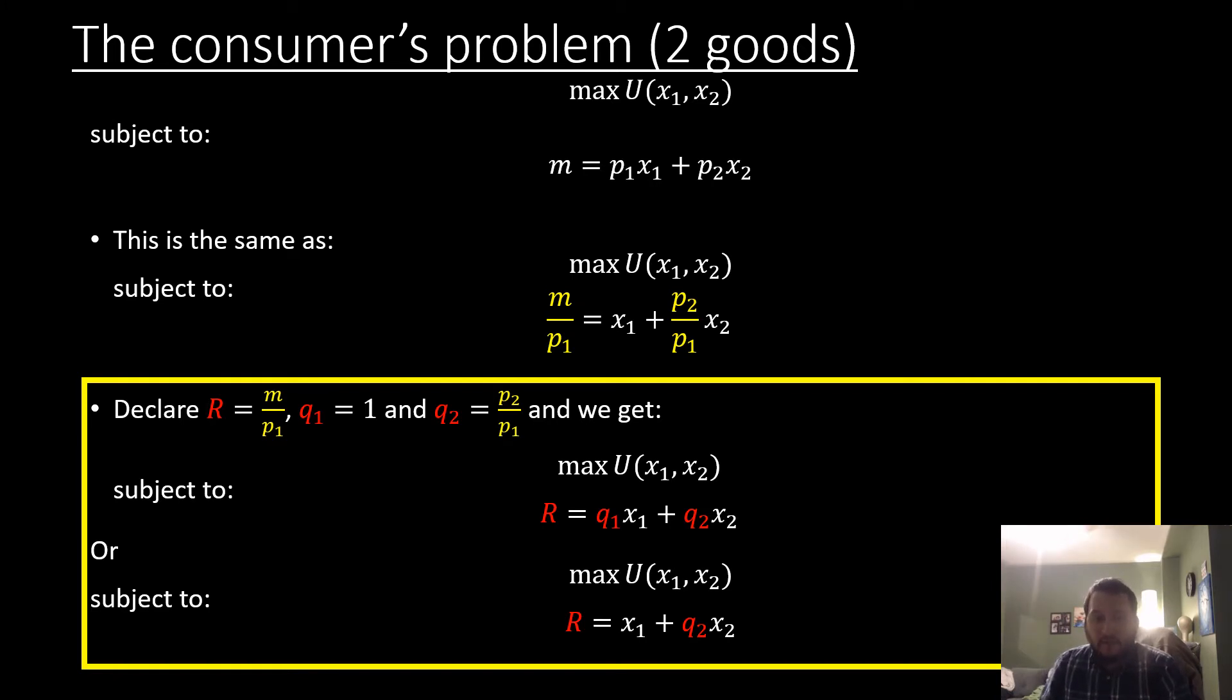With that we get our transformed utility maximization problem. We're maximizing our same objective problem subject to this constraint, or we can say we're maximizing our utility subject to this constraint where there's no price on good one because that just goes away, because we're just saying that q1 is equal to one because p1 over p1 is just equal to one.